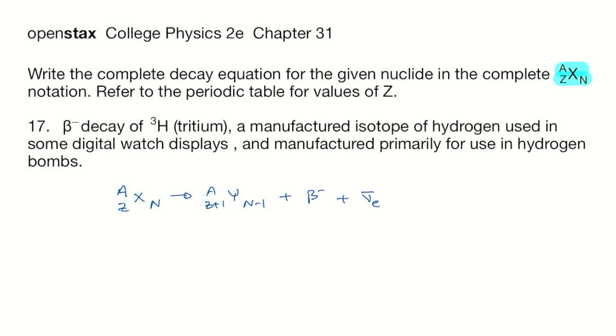So for tritium, we have A is 3, Z is 1, X is H, and N is 2. This decays into, we will have A is 3, Z is 2, N is 1, and so Y is helium HE plus the beta minus particle and the anti neutrino.